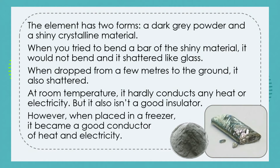After lots of investigation, we've discovered that this element exists in two forms. Form one is a dark grey powder, and form two is a shiny crystalline metal. Looking more closely, the crystals are long and organize themselves in parallel lines. This idea of an element having two forms is not uncommon.